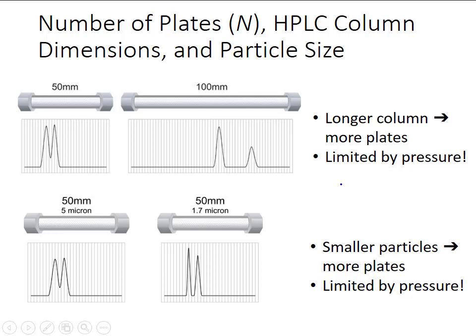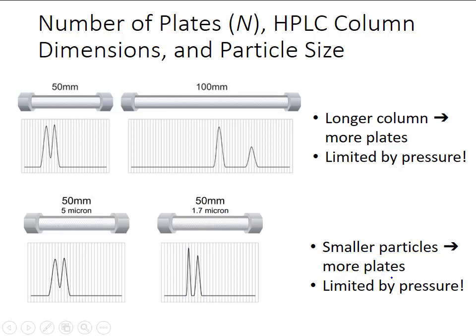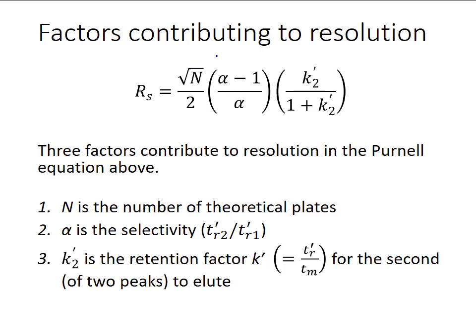Another way to get more theoretical plates is to use smaller particles. We see separation in a 50 mm column with 5 micron particles versus the same column with 1.7 micron particles — the peaks are narrower because smaller particles lead to more surface area and thus more plates. But once again, increased surface area creates more back pressure, so there are practical limits to how small the particle size can be. A 100 mm column with 5 micron particles are actually fairly standard HPLC parameters. Returning to the Purnell equation, the first term — the square root of N divided by 2 — can be improved by using either a longer column or smaller particles.